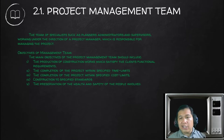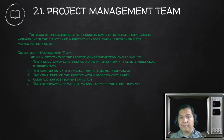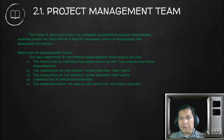The objectives of the management team are as follows. First, the production of construction works which satisfy the client's functional requirements. Second, the completion of the project within specified time limits. Projects are bound to a certain time limit, so you don't have unlimited time when you construct a house or a building. You should inform the client how long it will take for the building to be accomplished.